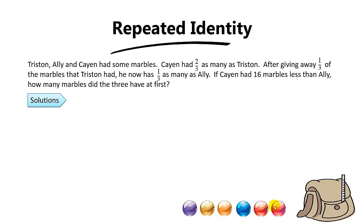Hi everyone, welcome to P5 mid-year revision. The first question we are going to revise today falls under the repeated identity concept. Under repeated identity, one of the items or persons stays the same. The question: Triston, Ellie, and Cayenne had some marbles. Cayenne had two-thirds as many as Triston. After giving away one-third of the marbles that Triston had, he now had one-third as many as Ellie.